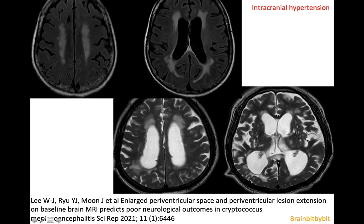Because of the accumulation of cryptococcus in the perivascular and especially the perivenular spaces, there is stagnation of CSF flow and intracranial hypertension. You can see on MRI high signal in the periventricular white matter on FLAIR, or even hydrocephalus. Especially intracranial hypertension is a very poor prognostic factor for patients with a cryptococcus infection.